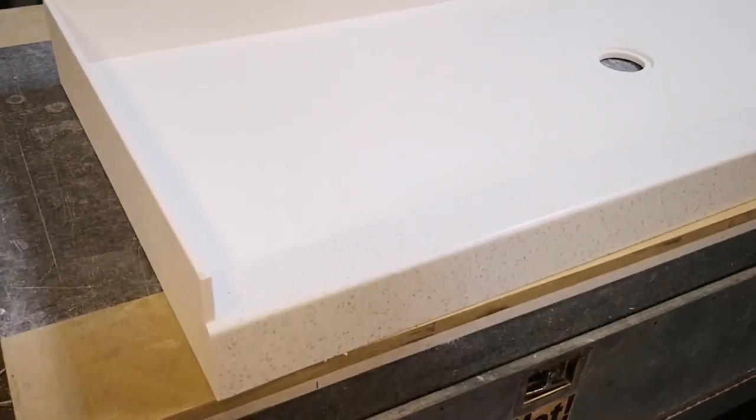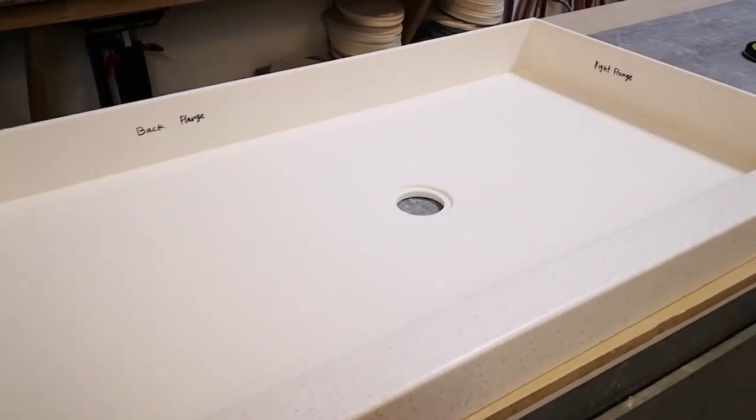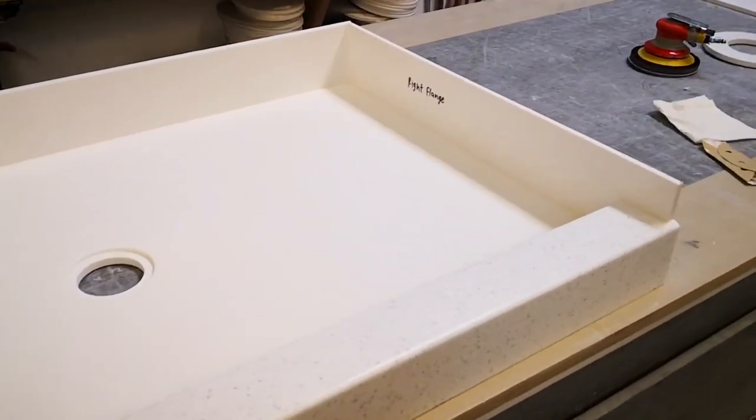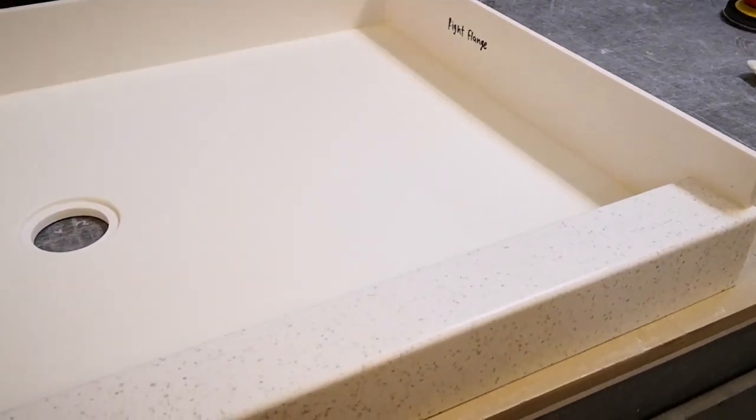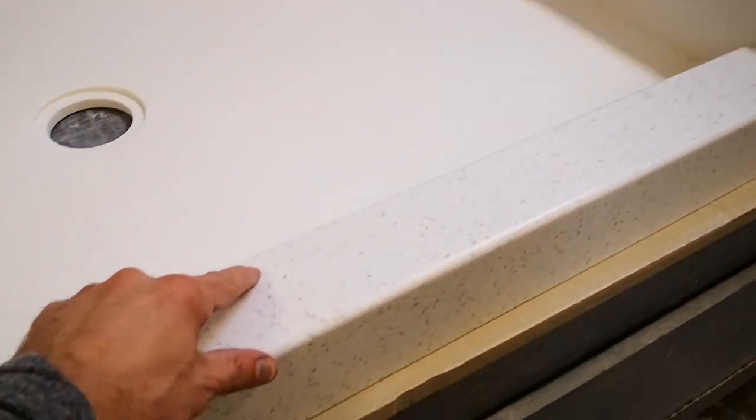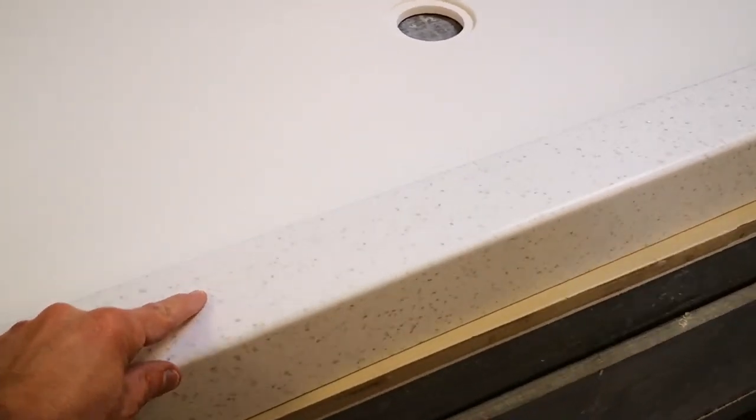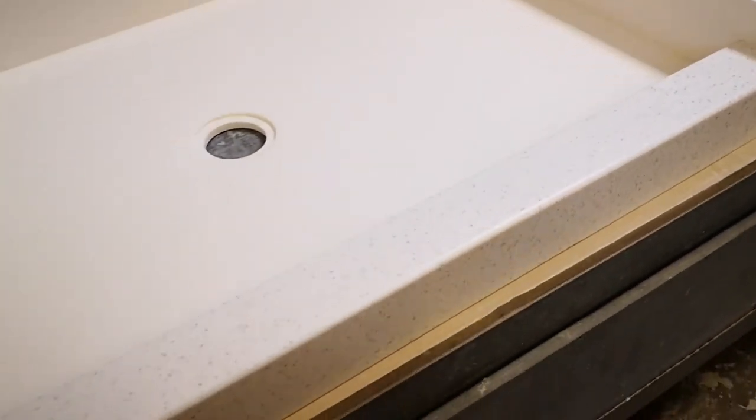Alright, so what we have here is a solid surface shower pan. It's made out of Staron material. The front portion right here is called the curb. It's made out of Staron Tempest Peak, and that runs the full width of the shower.